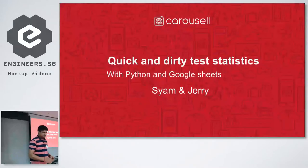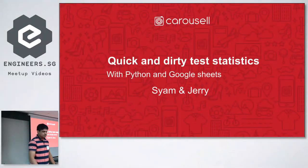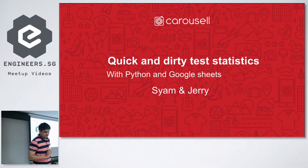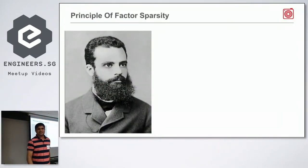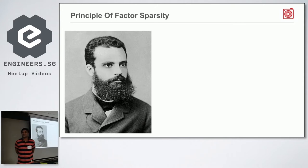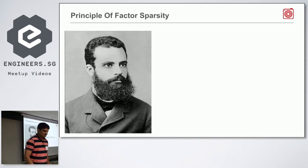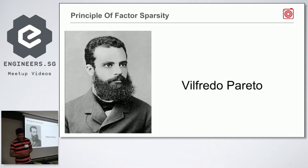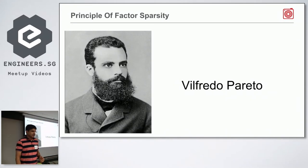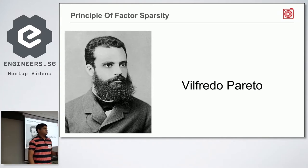The next session is quick and dirty test statistics. Any idea who this guy is? Have you heard about the principle of factor sparsity? Heard of the 80-20 rule? Actually the same guy. His name is Wilfredo Pareto. It's the 80-20 rule, also known as the Pareto principle. Basically it means that 80 percent of the effects come from 20 percent of the causes.